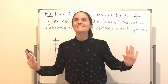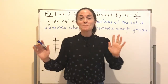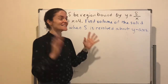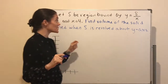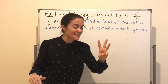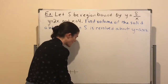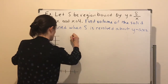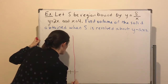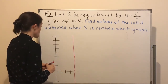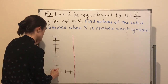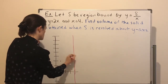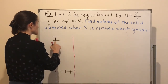Let me bring some examples from my smaller board — this one is important as to why the shells method is easier. We have a region bound by three curves: y = 8/x, y = 2x, and x = 4. I can immediately graph x = 4 as a vertical line. The line y = 2x goes through (0, 0) — at x = 4 we're up at y = 8.